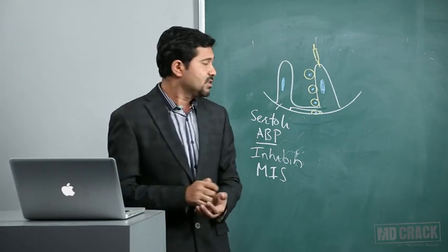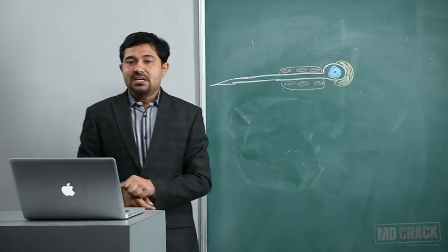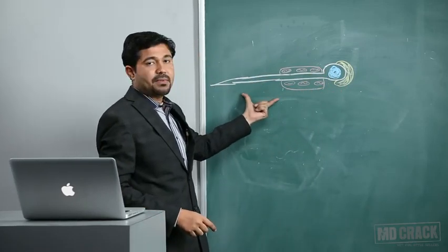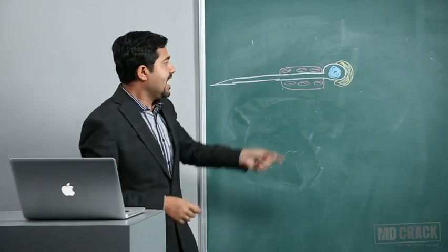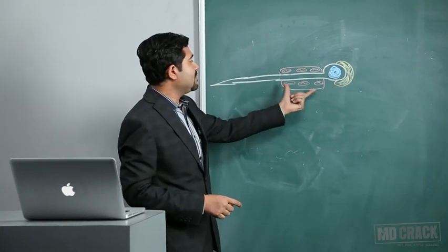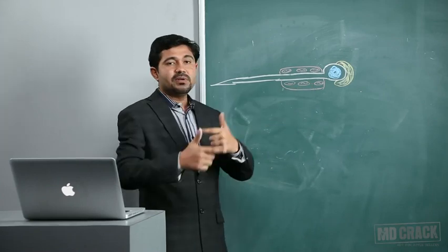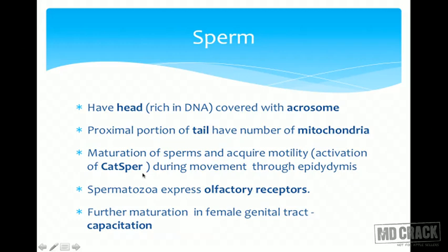The structure of the sperm consists of a head and a tail. The head mainly contains chromosomal DNA material and is covered by the acrosome, which contains lysosomal enzymes. The principal part of the tail contains a layer of mitochondria surrounded by a sheath. Sperms also contain an important calcium channel called CatSper. Maturation in the epididymis requires activation of this CatSper channel — when calcium entry occurs, sperms achieve motility.